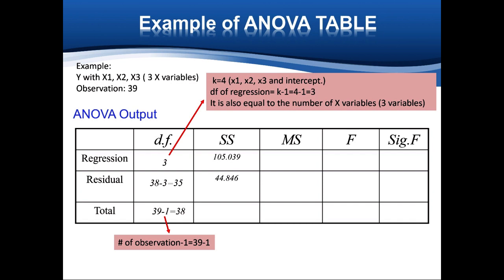Next column is SS. SST equals SSR plus SSE, so SST is the summation of the two rows. MSR equals SSR divided by the degree of freedom, so 105.039 divided by 3. And MSE equals SSE divided by the degree of freedom, which equals 1.281. The F-statistic equals MSR divided by MSE, so 35.013 divided by 1.281 equals 27.333. The significant F is actually a p-value using the F-test.